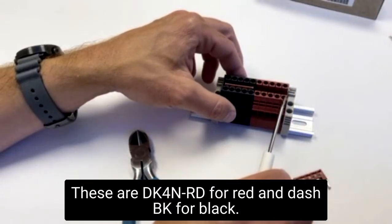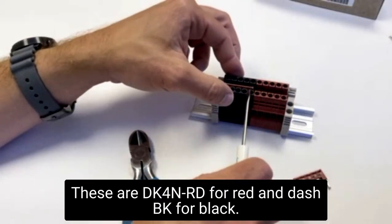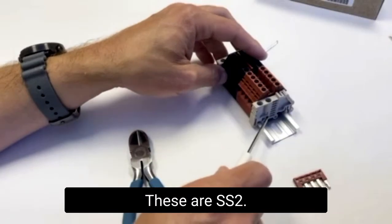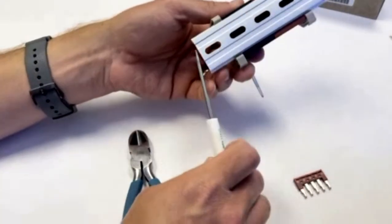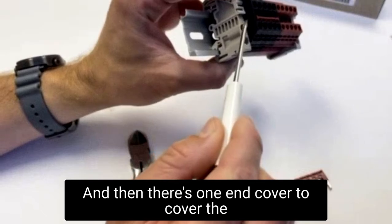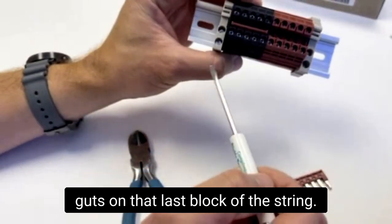These are DK4N-RD for red and -BK for black. These are SS2S. We got our five inch aluminum rail, and then there's one end cover to cover the guts on that last block of the string. When you have them stacked up, you only need one end cover. So that's it.